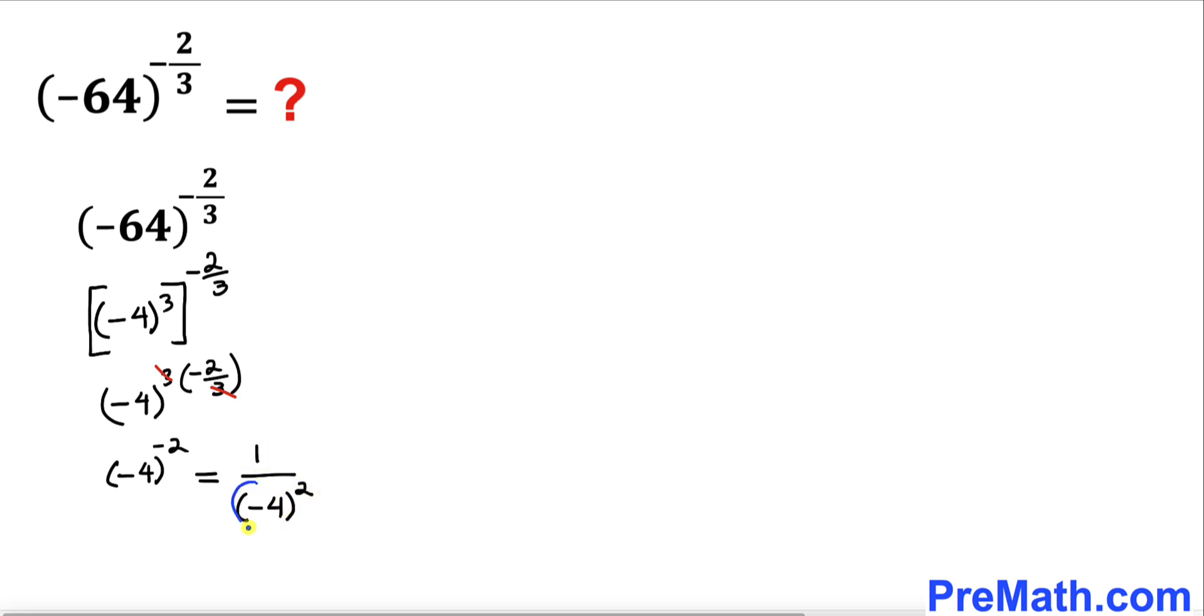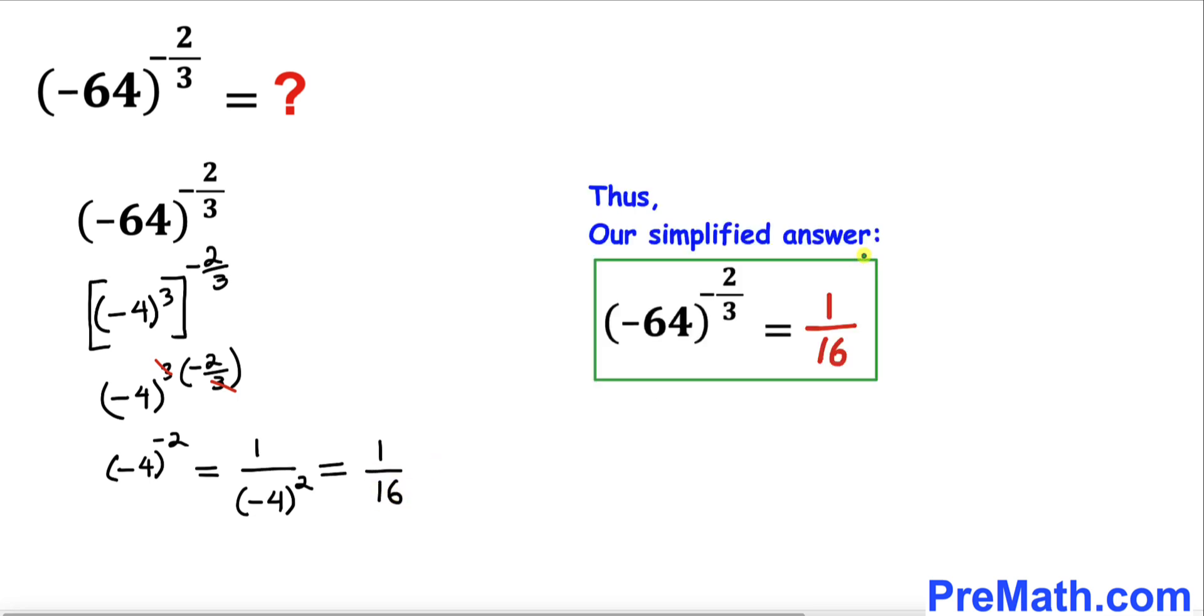Now let's focus on negative 4 to the power of 2. We can see that negative 4 squared is 16. Therefore, this equals 1 over 16. Thus, our simplified answer is 1 over 16.